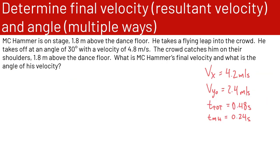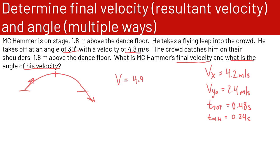Here we're trying to find MC Hammer's final velocity and the angle. Since this is a symmetrical trajectory — he takes off and lands at the same height — his initial and final velocities are the same in magnitude. He took off at 4.8 meters per second at 30 degrees, so he lands at 4.8 meters per second at minus 30 degrees. His final velocity is 4.8 meters per second at minus 30 degrees.